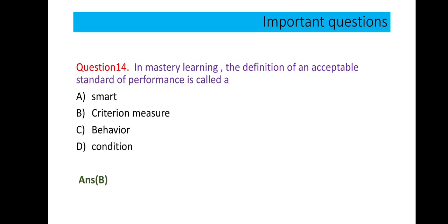Question number 14: In mastery learning, the definition of an acceptable standard of performance is called a criterion. It is a direct definition, so option B is correct.